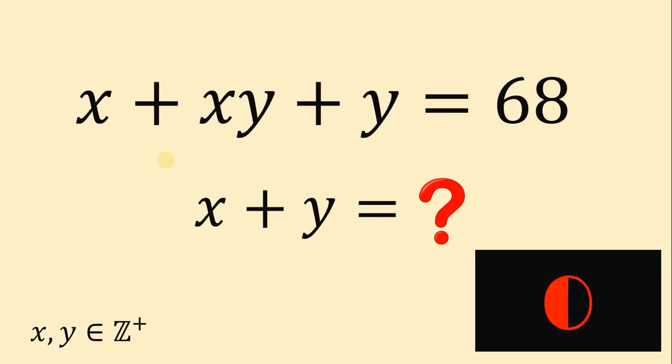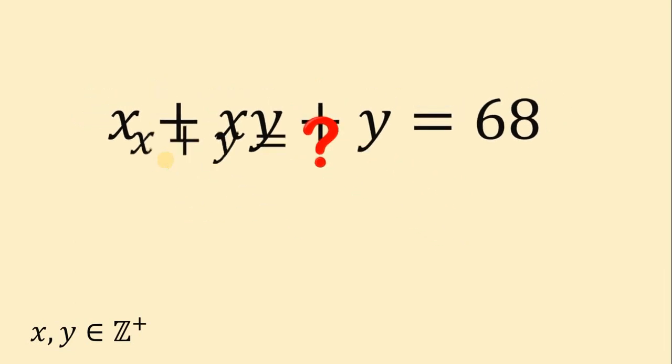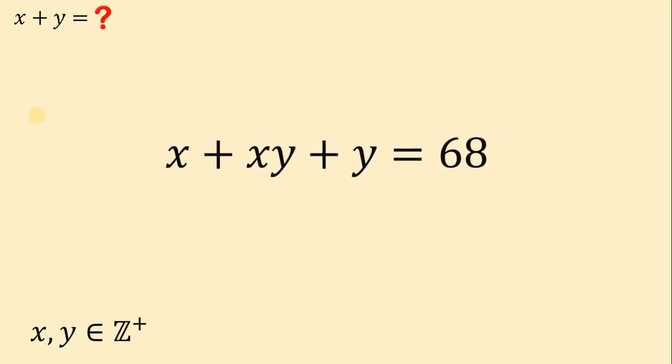And now let's answer this question together. The given is we have x plus xy plus y equals 68, where x and y are both positive integers, and our goal here is to solve for the value of x plus y.